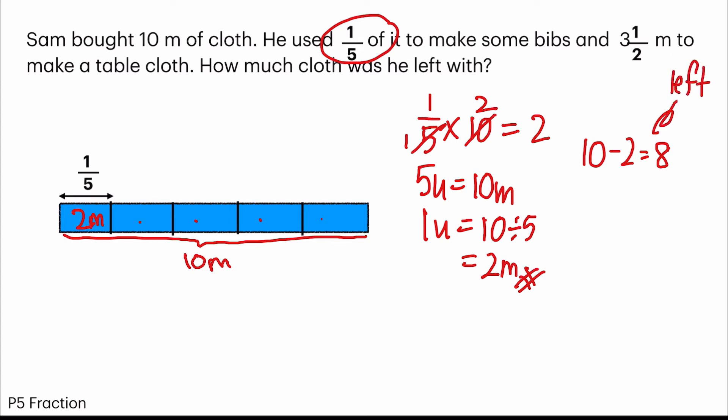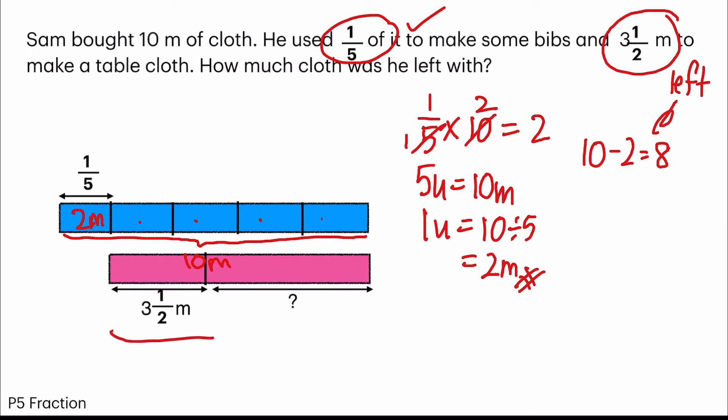And the second part, he said he used three and a half meters to make a tablecloth. So I drew a model, this part, a pink color portion for the remaining. And the entire thing here will be eight meters. And he used three and a half meters.